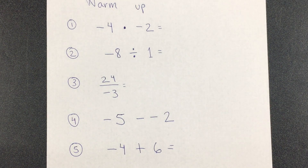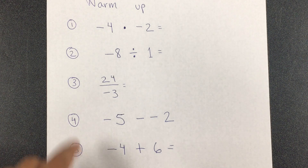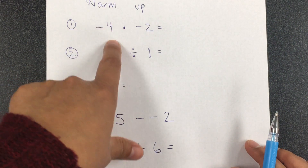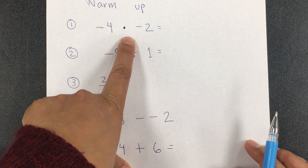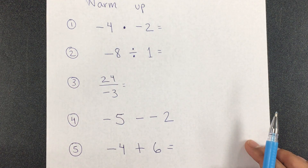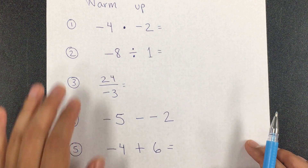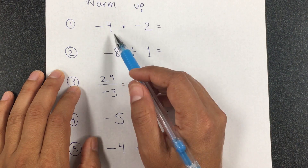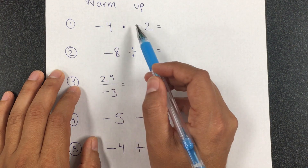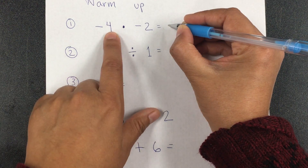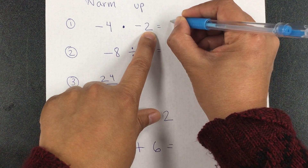We already did a pre-assessment in class, so try it — pause the video — and now I'm going to give the answers. Hopefully you already tried it on your own, because that's what warm-ups are for: to see how much you know. This dot means multiplication, so negative times negative becomes positive, and 4 times 2 is 8.